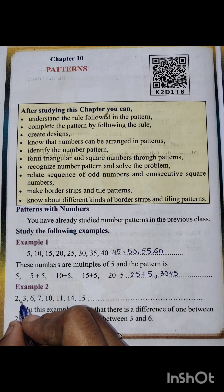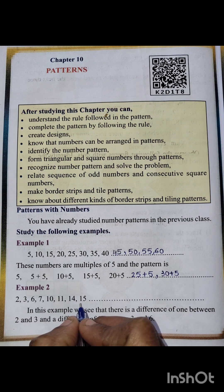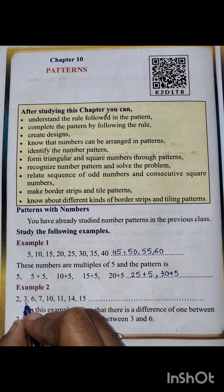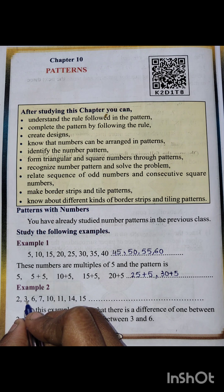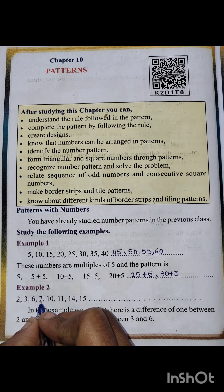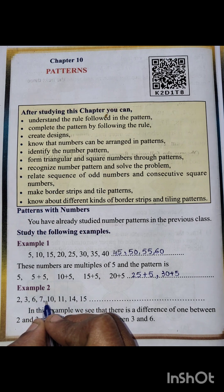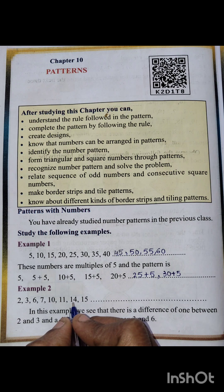Example 2: 2, 3, 6, 7, 10, 11, 14, 15. Let's see the differences. 3 minus 2 is 1, 6 minus 3 is 3, 7 minus 6 is 1, 10 minus 7 is 3. So the differences alternate: first 1, then 3, then 1 again, then 3 again.